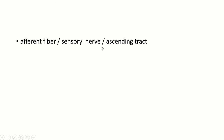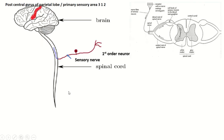Afferent fibers present within the sensory nerve and ascending tract are related with afferent fiber. This is the cross section of the spinal cord — this is the inner gray matter, outer white matter. This is the ventral root, this is the dorsal root of the spinal nerve, this is the spinal nerve, this is the dorsal root ganglia, which contains pseudounipolar neurons. This is the peripheral process of the pseudounipolar neuron.